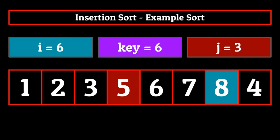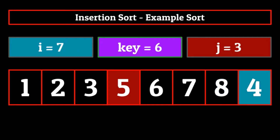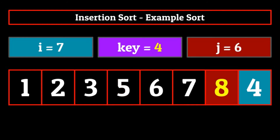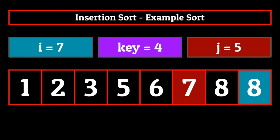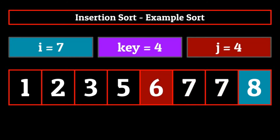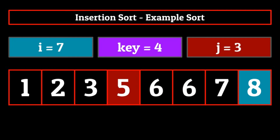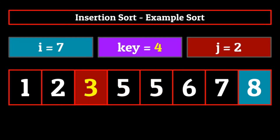We only have one more element now. We increment i so that it becomes seven. Key becomes the element at index location seven, which is four, and j becomes seven minus one, which is six. The element at index location j, eight, is greater than the key element four, so we set our values accordingly and decrement j. Again, the element at index location j, seven, is greater than four, so we set our values and decrement j. The element at j, six, is still greater than four, so we set our values and decrement j. Then the element at j, or five, is greater than four, so we set our values and decrement j. And finally, the element at j, or three, is not greater than four. So we set the element at index location j plus one to be equal to the key element four. And just like that, we have successfully sorted our list of eight elements using insertion sort.